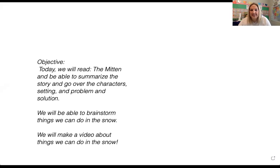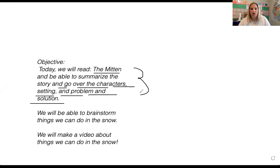We are going to read a story that has snow in it. And of course, we are going to be able to name the characters, the setting, the problem, and the solution. So let me share my screen and show you what our objective is today. Today we will read The Mitten, and we will be able to summarize the story, go over the characters, setting, and the problem and solution. We need all of these story elements to be able to summarize a story.